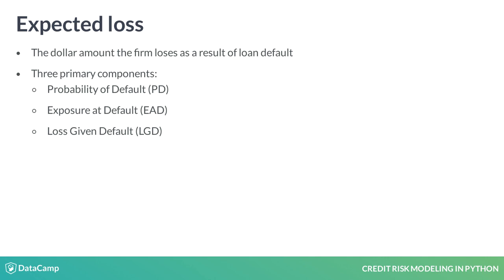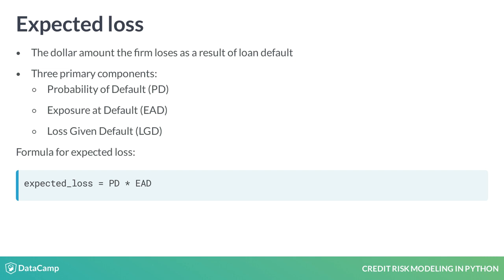which is the ratio of the exposure against any recovery from the loss. For my example, the $100 we were owed is our exposure, and if we sell that debt for $20, our loss given default would be 80%. The formula for expected loss is probability of default times exposure at default times loss given default.